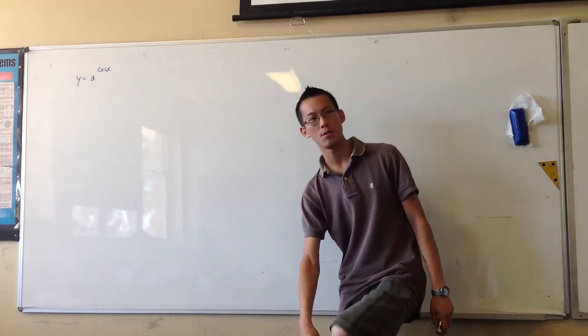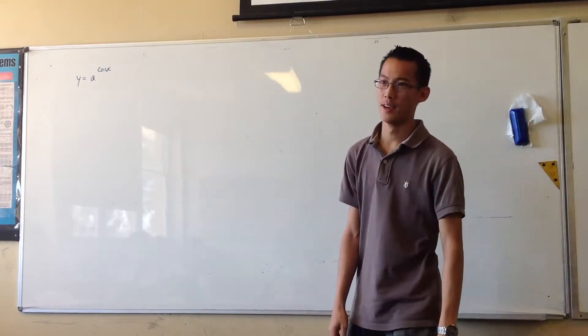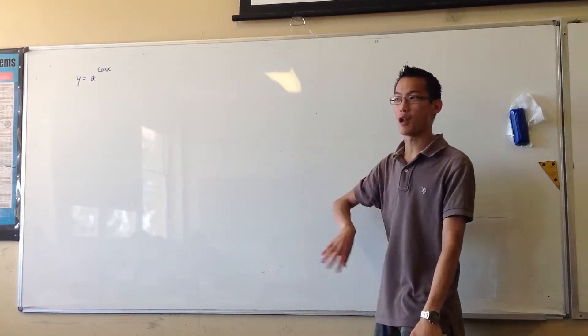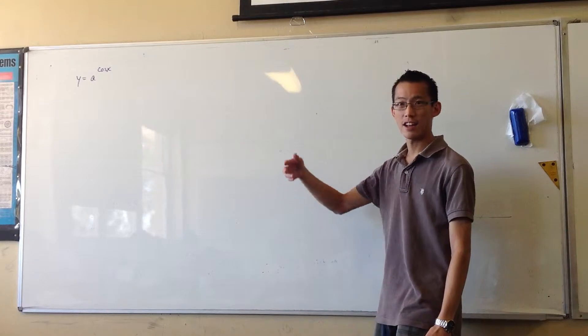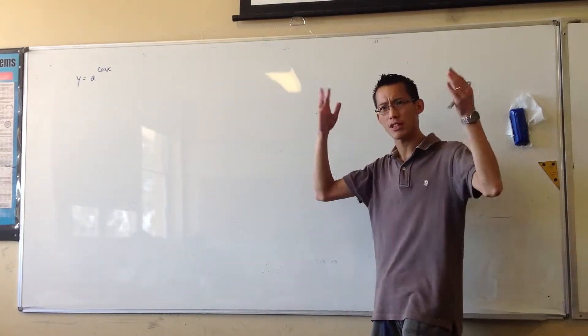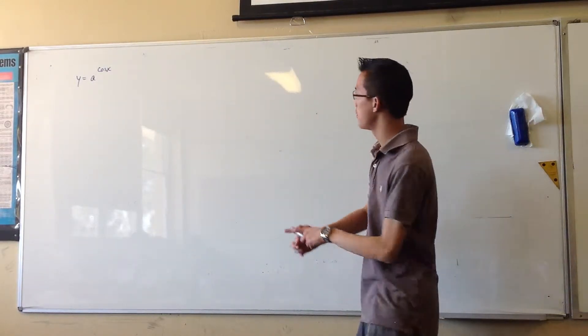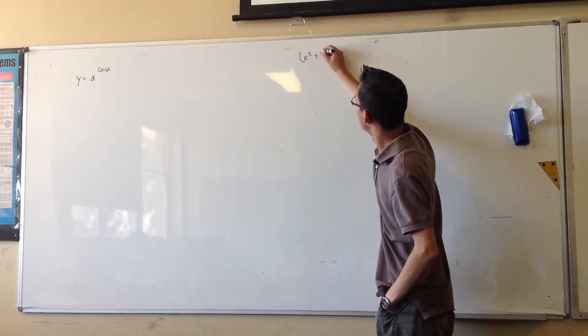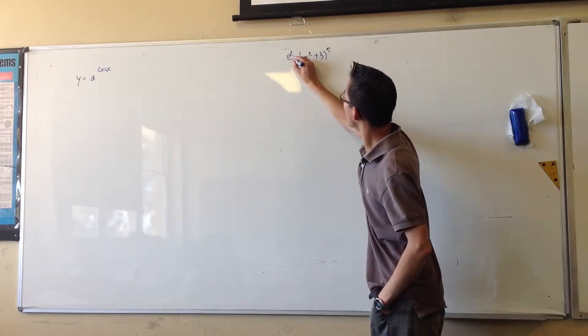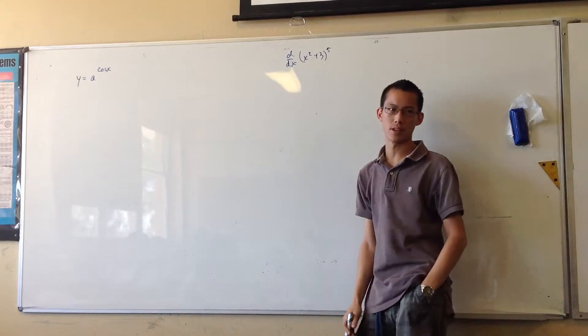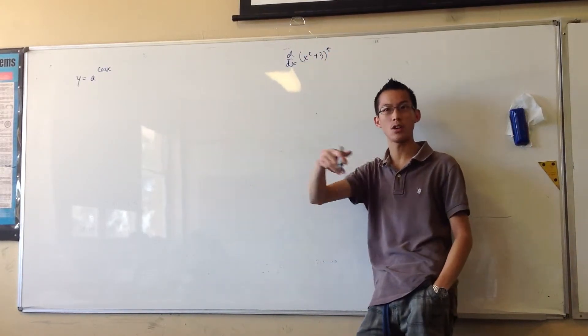Now, by this time, you guys have been doing chain rule for a long time, so you've probably got into the habit of skipping the let u equal blah blah blah, and you do the substitution, because you sort of do it in your head, right? That's fine when you're meeting something familiar. It really would be a waste of time to let u equal the inside function and so on.